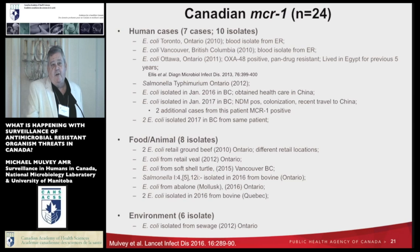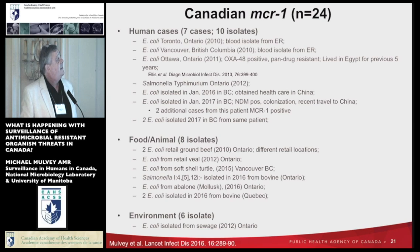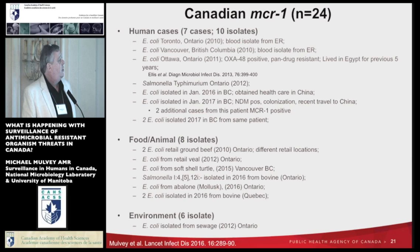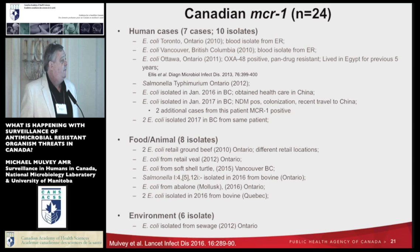This is the Canadian picture right now — data mined from whole genome sequences or collected through reference services. Some provinces are looking at colistin resistance and sending us isolates to confirm. We've had seven human cases so far from 10 isolates. We've also seen it as part of our CPARS program — it's in our food and animal supplies, primarily from retail beef. We've also been working with Tom Edge from Environment Canada and Dr. Alison McGeer on a Toronto area sewage study, and we found six isolates containing mobile colistin resistance from sampling done in the Toronto sewage system back in 2012.